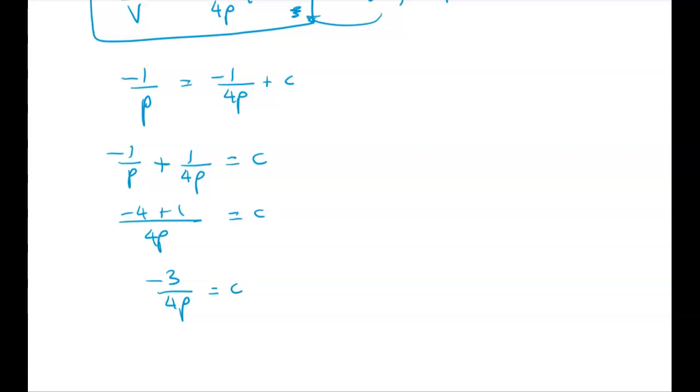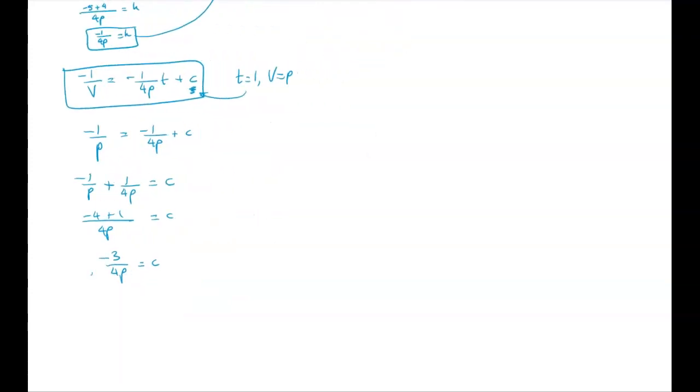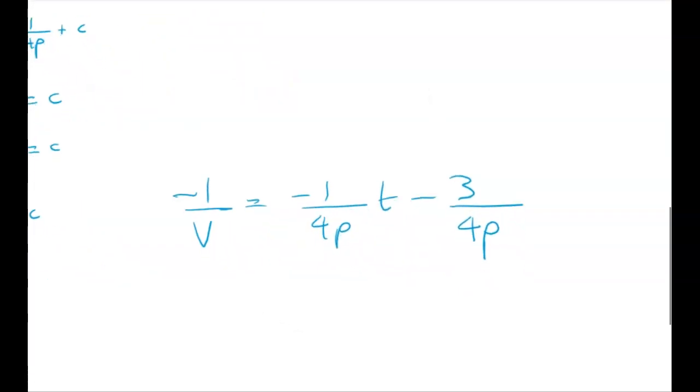So we're just about there. That gives me back into our original equation here. Negative 1 over V is equal to negative 1 over 4P times T minus 3 over 4P. Now by this stage a couple of things are really annoying me. I wish I'd got rid of those negative signs earlier but I didn't, and I don't like having V in the denominator. So we're going to fix all of that up now but we're basically there. What we have to do now is to substitute in T equals 0.